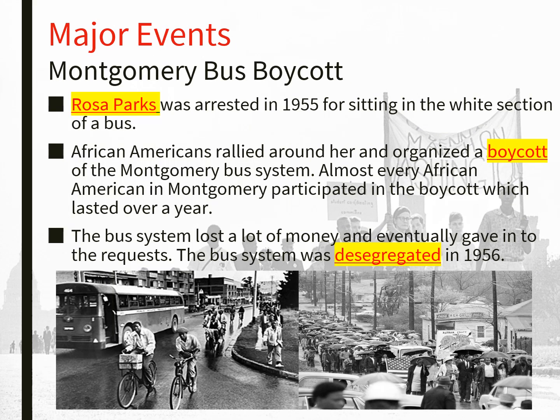Let's talk about the major events. The Montgomery Bus Boycott: Rosa Parks was arrested in 1955 for refusing to give up her seat. Black Americans rallied around her and organized a boycott of the Montgomery bus system. Nearly every Black American in Montgomery participated, refusing to ride the bus and pay their fares. The bus system lost a lot of money and eventually gave in — the bus system was desegregated in 1956, just one year later.